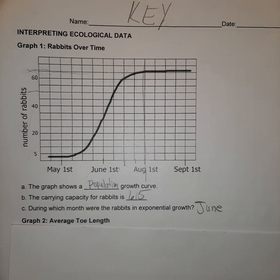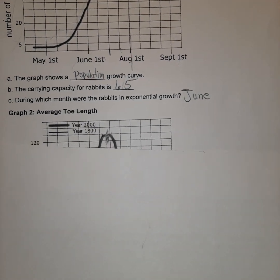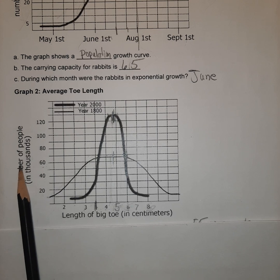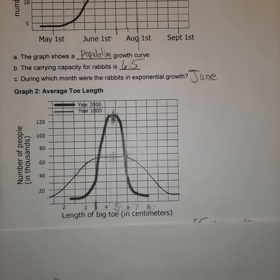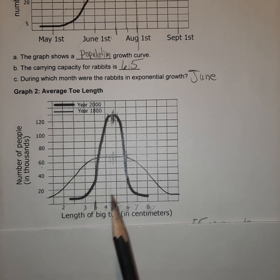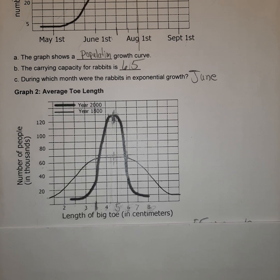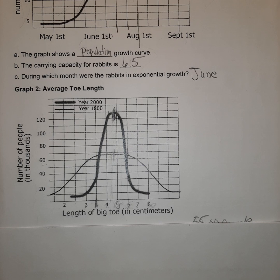The next type of graph compares two different eras — the 1800s and 2000s — looking at the length of big toes in humans. On the y-axis you have thousands of people: 20,000, 40,000, 120,000. The x-axis has some irregularities — it goes 2, 3, 4, then jumps to 6 and 8. I would recommend that when you graph anything, you keep the scale consistent. I labeled 5 and 7 on the graph to avoid errors when estimating.